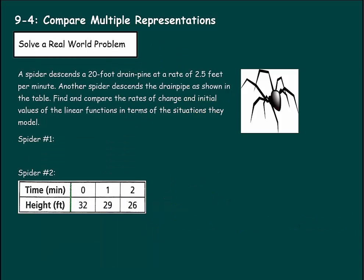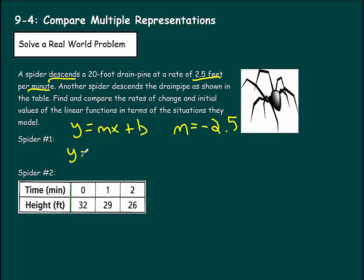Now we can solve a real-world problem. A spider descends a 20-foot drain pipe at a rate of 2.5 feet per minute. Another spider descends the drain pipe as shown in a table. We need to find and compare the rates of change and initial values of the linear functions. For spider 1, we write y equals mx plus b. Here x is the number of minutes and y is the height of the spider. The rate is the slope — it's descending 2.5 feet per minute, so the slope is negative 2.5. The spider starts at the top of the 20-foot drain pipe, so the y-intercept b is 20. The equation is y equals negative 2.5x plus 20.